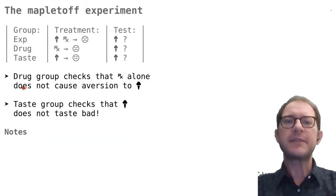The first test of this hypothesis was the so-called Mapletoff experiment, which was conducted with child patients. The experiment had three groups of subjects. The experimental group ate ice cream right before a drug treatment. The ice cream flavor was made up by Bernstein mixing two existing flavors, maple syrup and toffee, which she named Mapletoff. She did this because she wanted to be sure that the children had never tasted that flavor before.